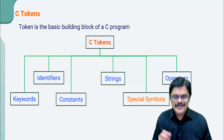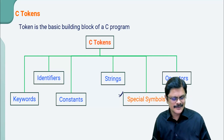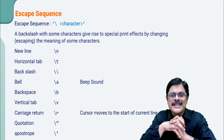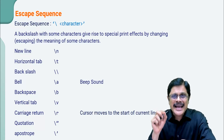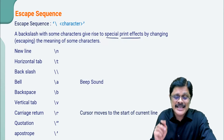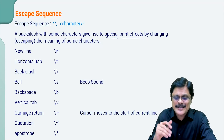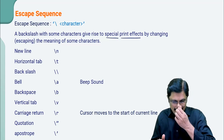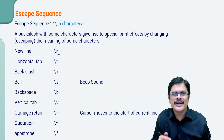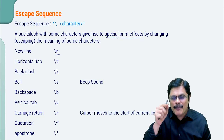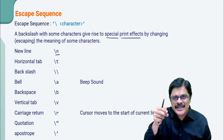So let us talk about special symbols. The first type of special symbols are escape sequences — we can also call them backslash characters. A backslash with some character gives rise to a special print effect by changing the meaning of the character, that is by escaping the meaning of the character. So backslash n, which we already used, gives the next line or new line — whenever you find backslash n, it represents new line.